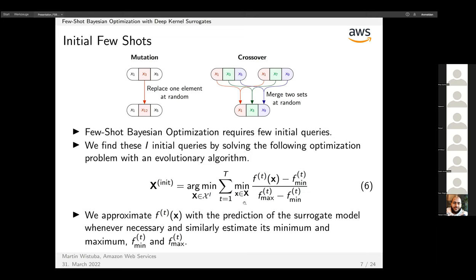We sum over all these tasks and want to find this set of initial points that overall minimizes the loss. The remaining part is some sort of normalization applied on the losses to account for different scales in the different datasets.